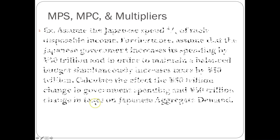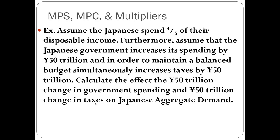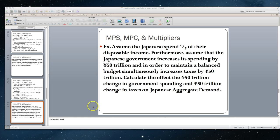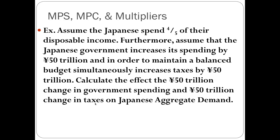Next, we're going to assume that the Japanese spend four-fifths of their disposable income, and that the Japanese government increases spending by 50 trillion yen. To maintain a balanced budget, they simultaneously increase taxes by 50 trillion yen. We'll calculate the effect of both the 50 trillion yen change in government spending and the 50 trillion yen change in taxes on Japanese aggregate demand.